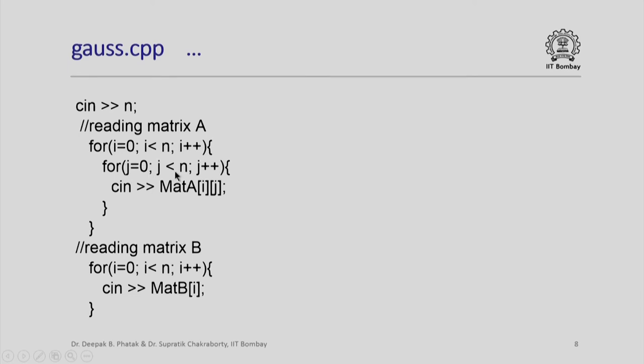So, for every value of i, j will be varied from 0 to n minus 1. Notice that the input will have to be given in the row order, that is 0th row all values will be input first, then i will become 1, then the row number 1, all values of other columns will be given etcetera.